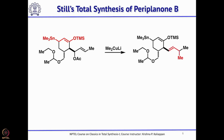At this stage, lithium dimethylcuprate was used. Lithium dimethylcuprate is known to undergo 1,4-addition to allylic acetates. The methyl group attacks, the double bond migrates, and the acetate leaves — that is how the second methyl group was introduced, which is required for making the isopropyl group. At this point, the right-hand side of the molecule is complete and the ketone needs to be generated.